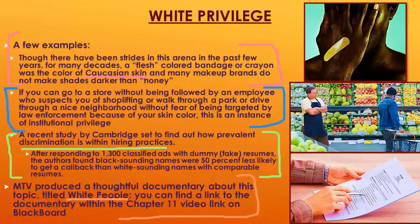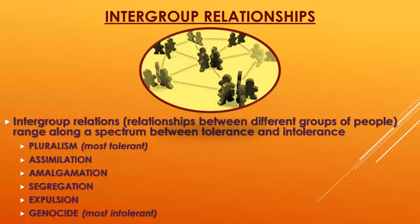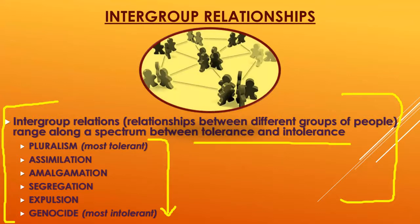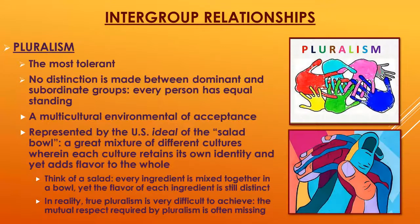Now we look at intergroup relations — how different groups in society interact with one another. There are six categories ranging from pluralism to genocide, representing a spectrum from tolerance to intolerance. The first and most tolerant is pluralism, where everybody fits in together retaining their own identity, no distinction is made between dominant and subordinate groups, and every person has equal standing.